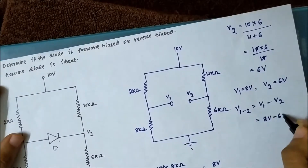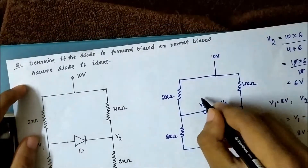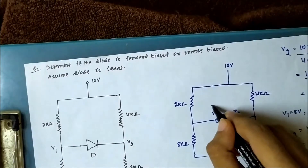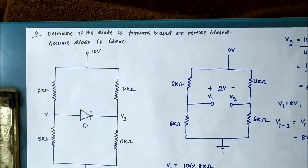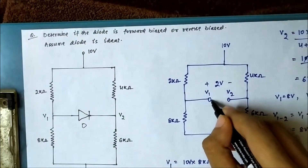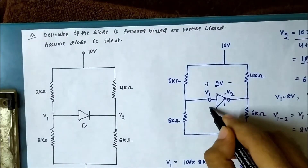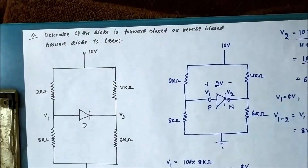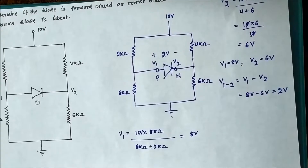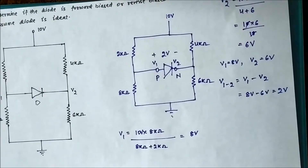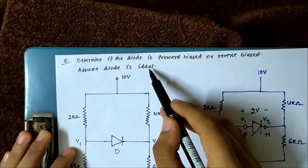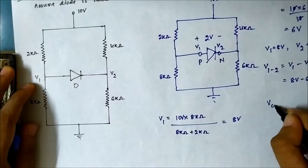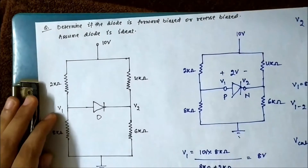The voltage between points one and two is equal to V1 minus V2, which is eight volts minus six volts, equal to two volts. So if we connect a diode in the circuit, the voltage across the PN junction diode will be two volts. Now, here it has been given that the diode is ideal. The diode being ideal means that the cutting voltage of the diode is zero volts.